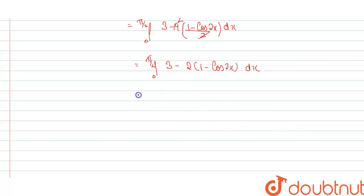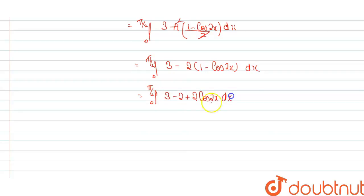On further simplification, we can write the integral from 0 to π/2 of [3 - 2 + 2cos(2x)] dx, which becomes the integral from 0 to π/2 of [1 + 2cos(2x)] dx.